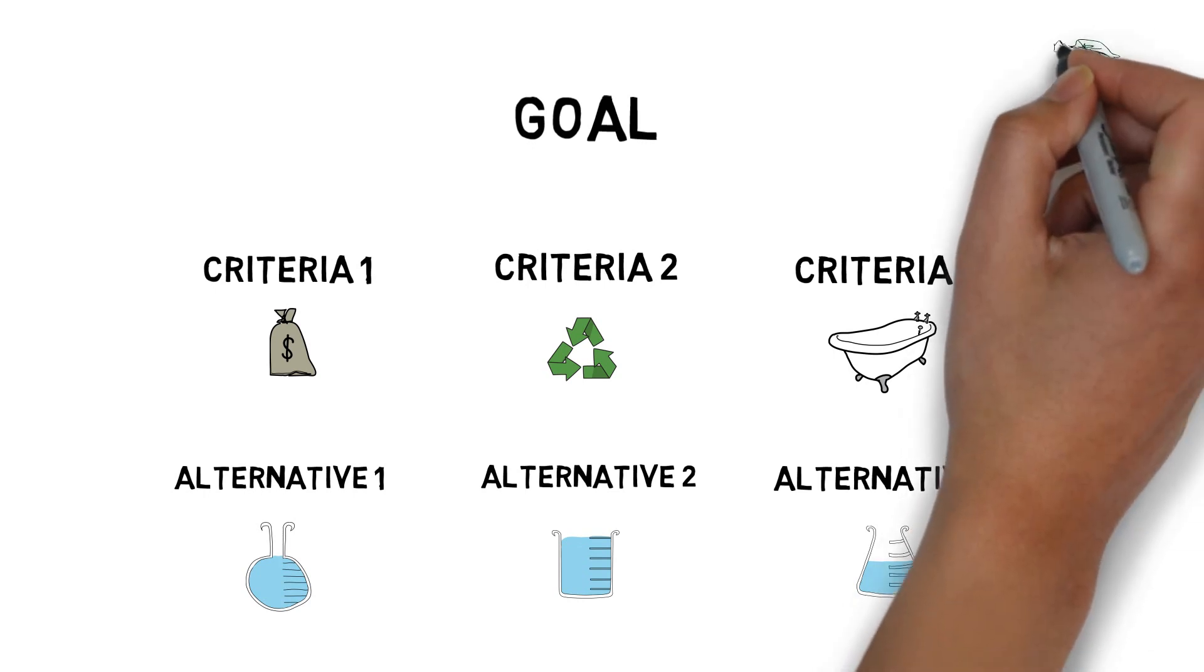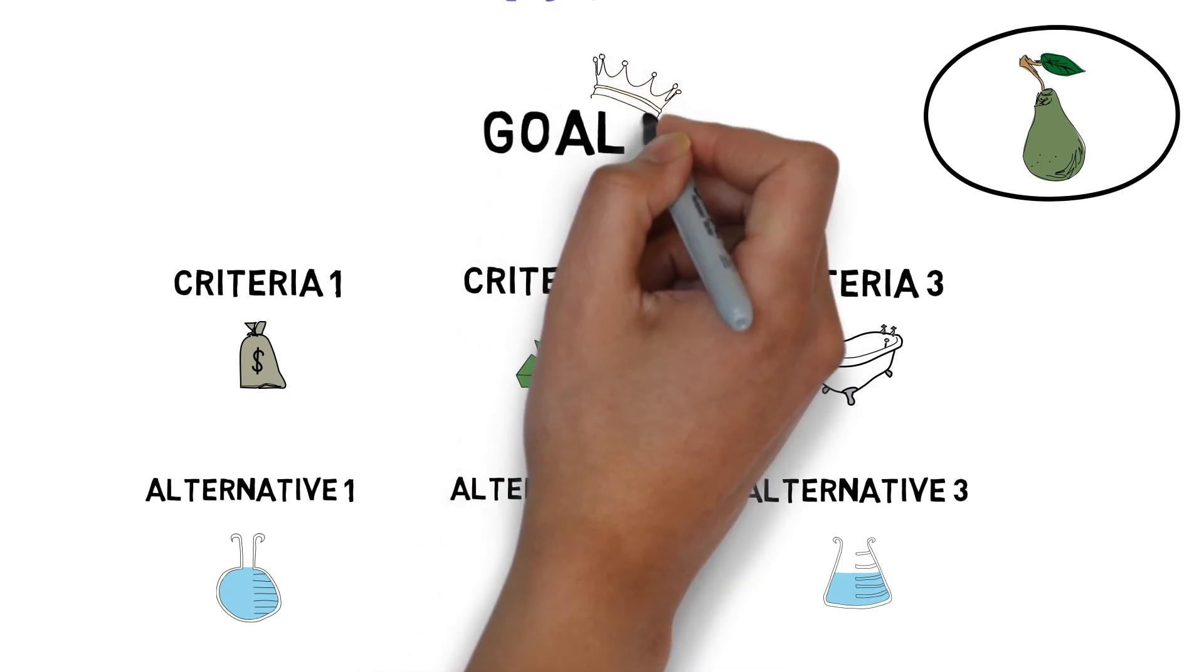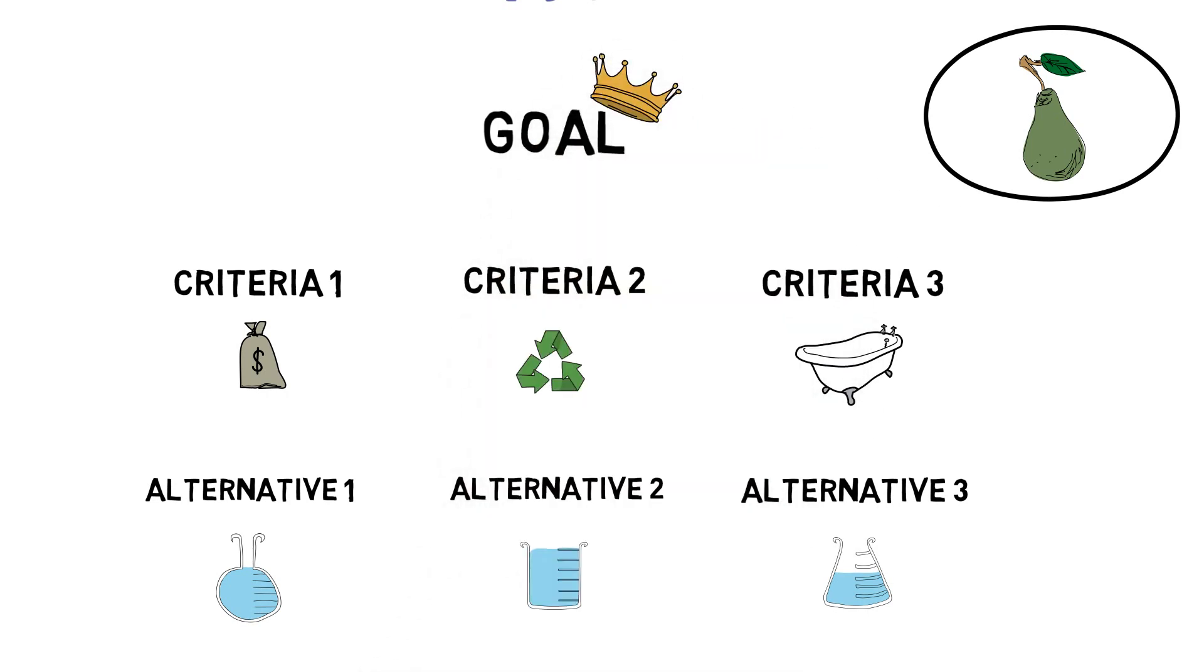We can then tackle our sub-problems individually through a comparison of pairs, one at a time. AHP then allows us to combine these sub-comparisons into one final solution, allowing us to include weightings, which we can demonstrate have been put together in a logical and robust way.